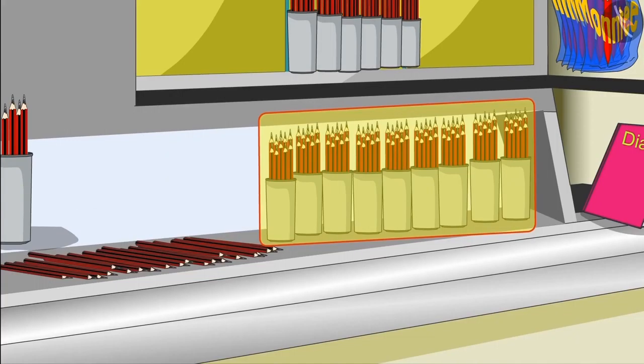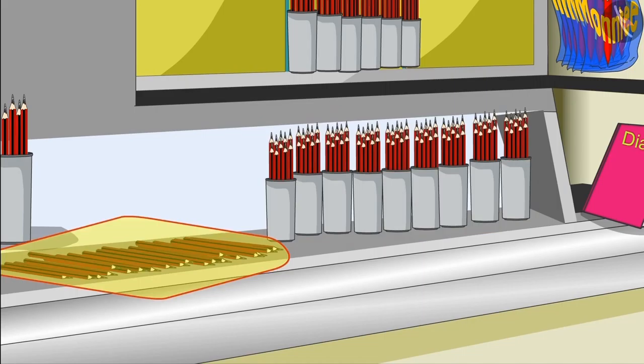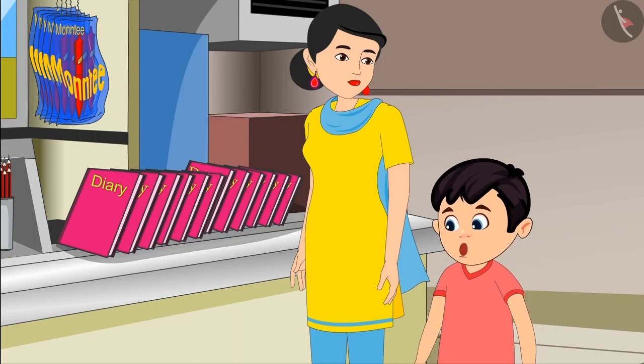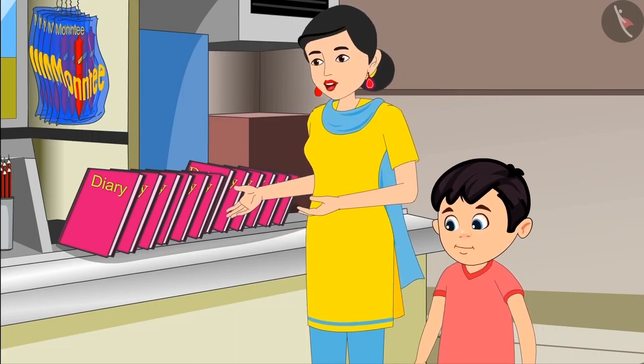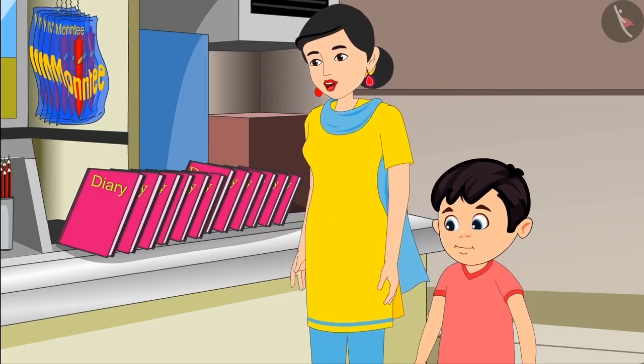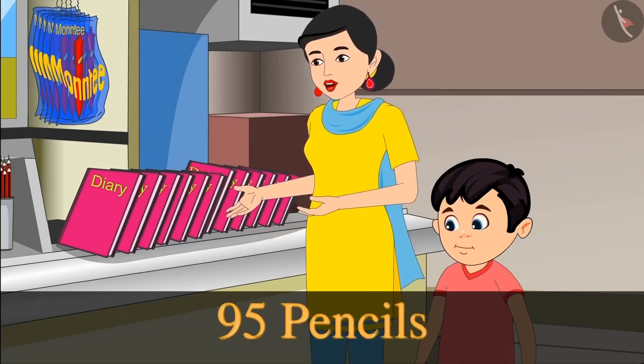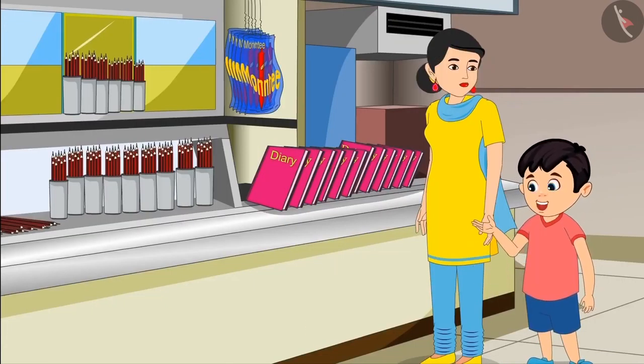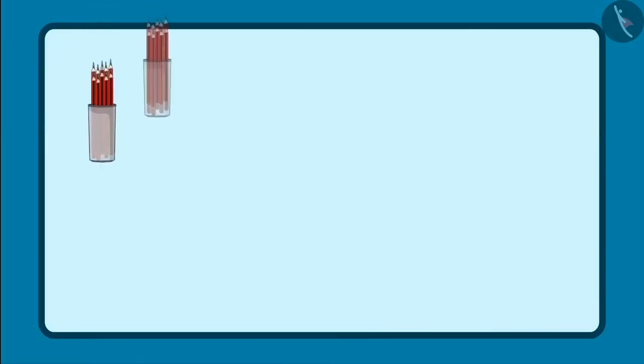Choto has gone to the store with his mother to buy the goods. Mommy, why are these pencils placed here in two different places? Choto, look. Here the pencils are kept in groups of ten. And there are loose pencils here. Okay, but why is this, Mommy? Wait, Choto, I'll tell you.